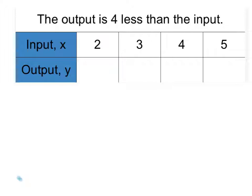So our objective here is to fill in the table, the missing data. And we have this to guide us: The output is 4 less than the input.